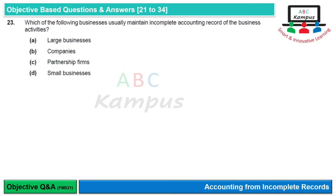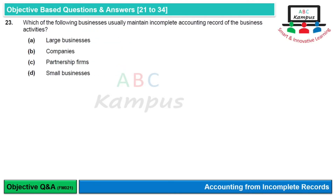Question 23: Which of the following businesses usually maintain incomplete accounting records of business activities? Options: large businesses, companies, partnership firms, small businesses।